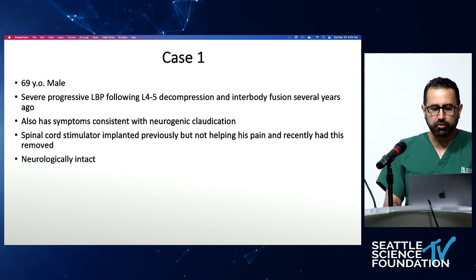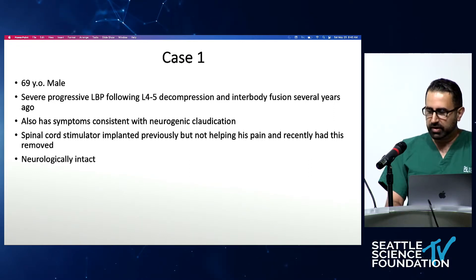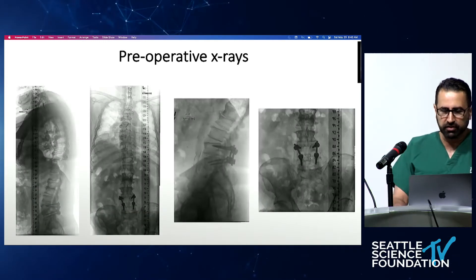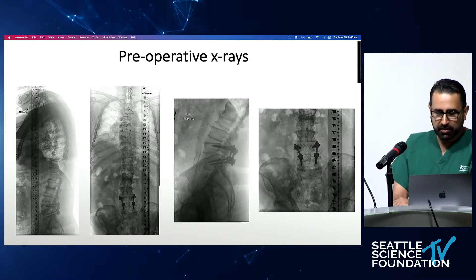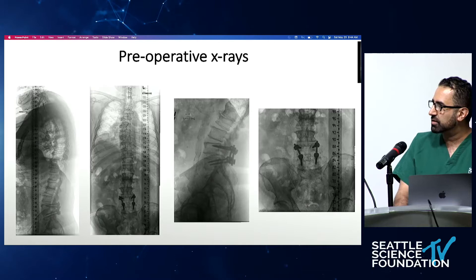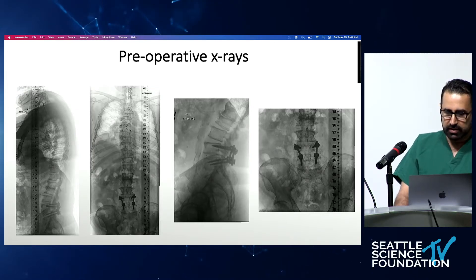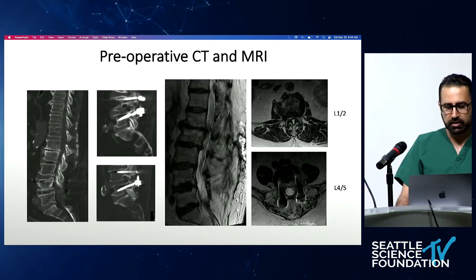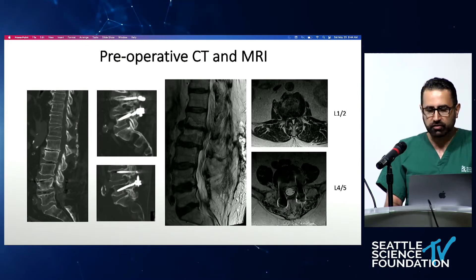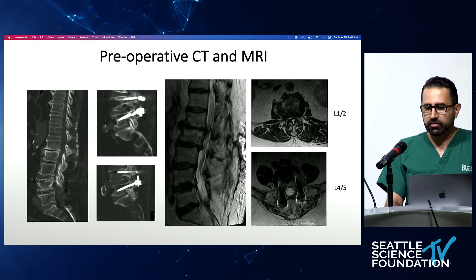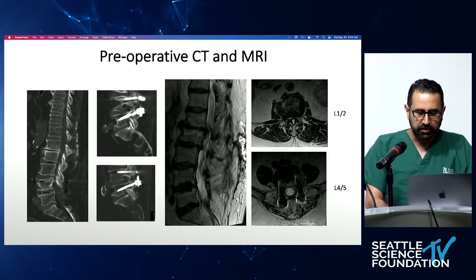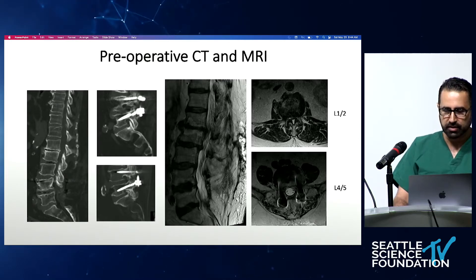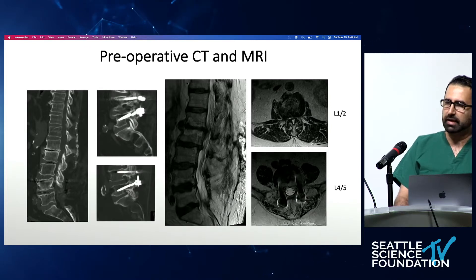Let me start with a case illustrating what can be achieved. This was a 69-year-old gentleman who had a previous L4-5 decompression and interbody placed several years ago, now presenting with progressive back pain and neurogenic claudication. A stimulator was attempted but removed. On three-foot standing imaging he's in alignment, but there's failure of instrumentation especially across the L5 screws — no arthrodesis achieved. CT imaging confirms pseudoarthrosis leading to instrumentation failure. MRI shows severe canal stenosis at L1-2 and L2-3.